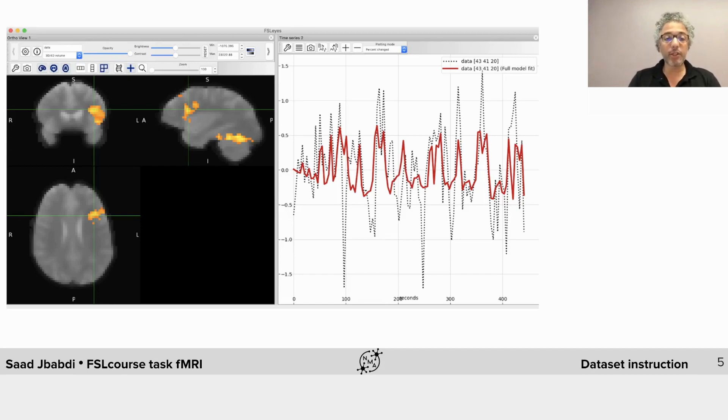The data is four-dimensional typically. Three dimensions for space, one for time. In task fMRI, we apply a set of stimuli to the subject while they're lying in the scanner. We then fit a model to each voxel in the brain based on the stimulus timings and on a model of the BOLD response. We then use statistical techniques to find out which brain areas best fit with our model.